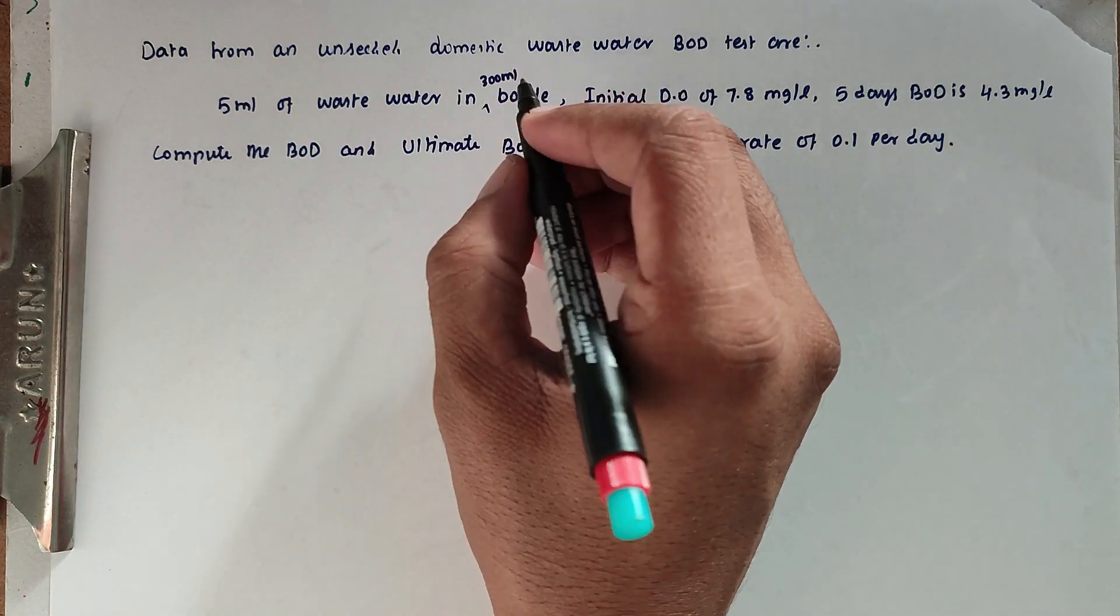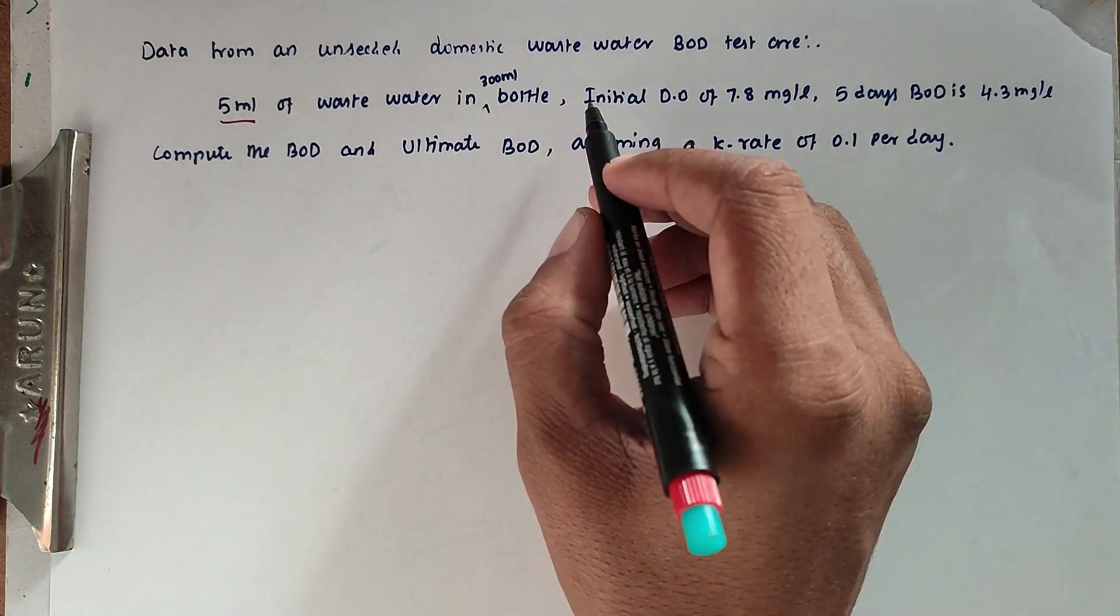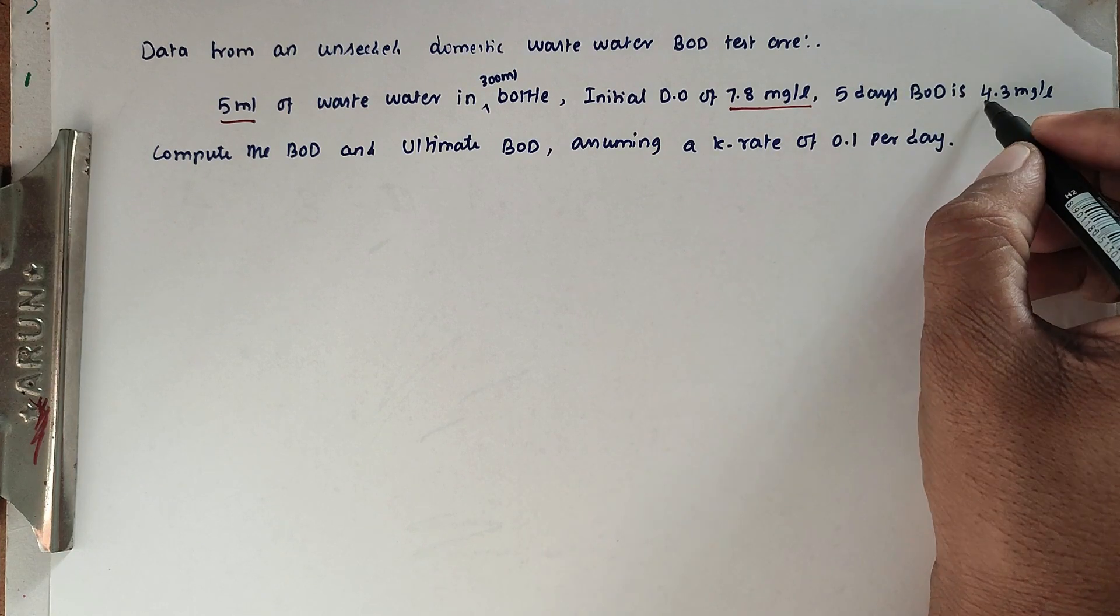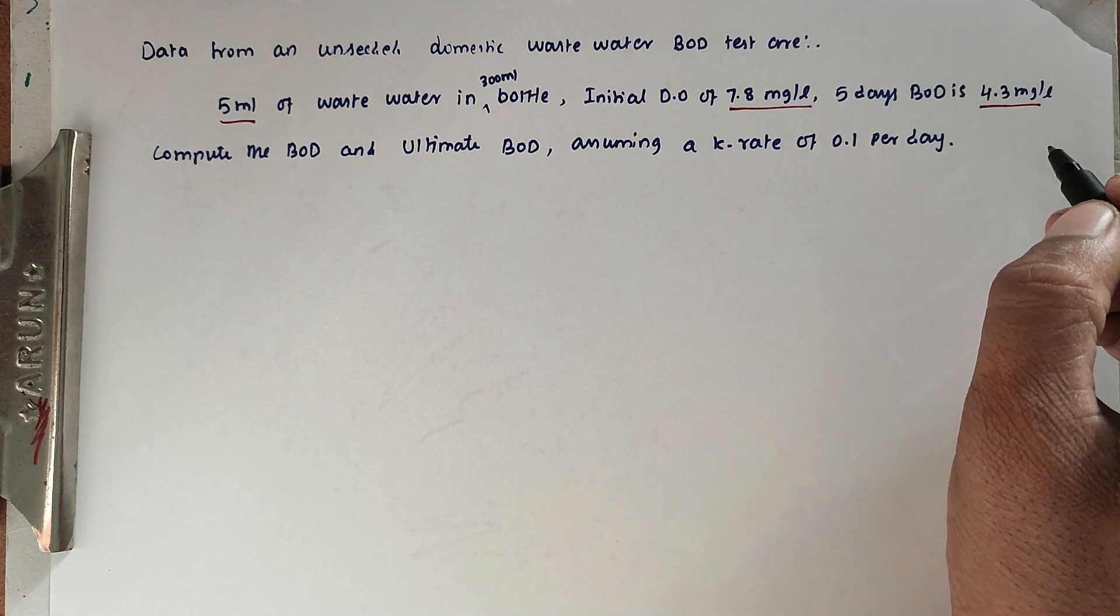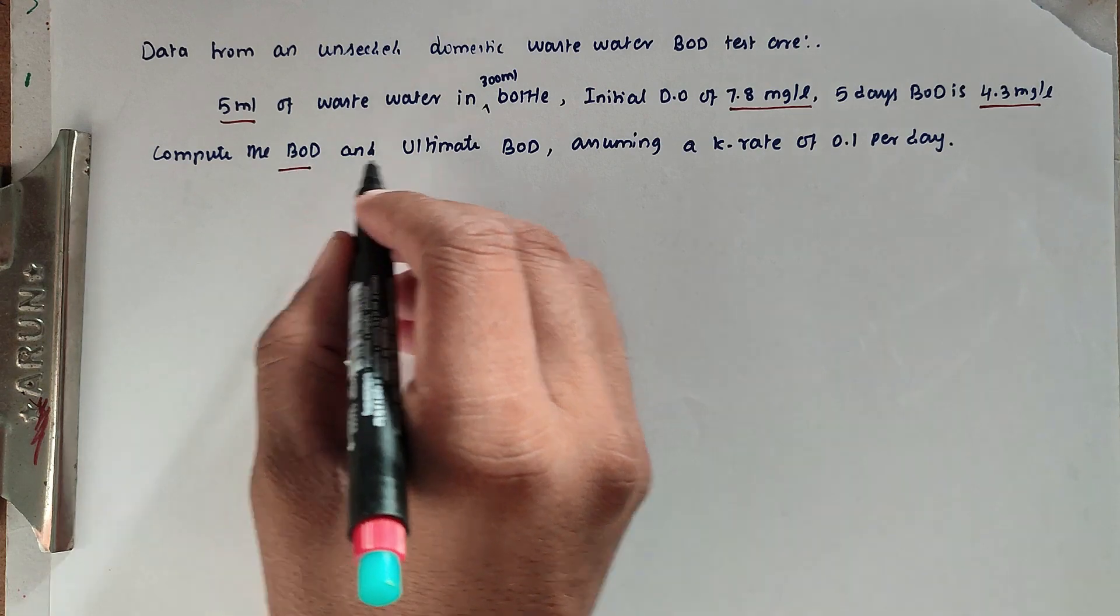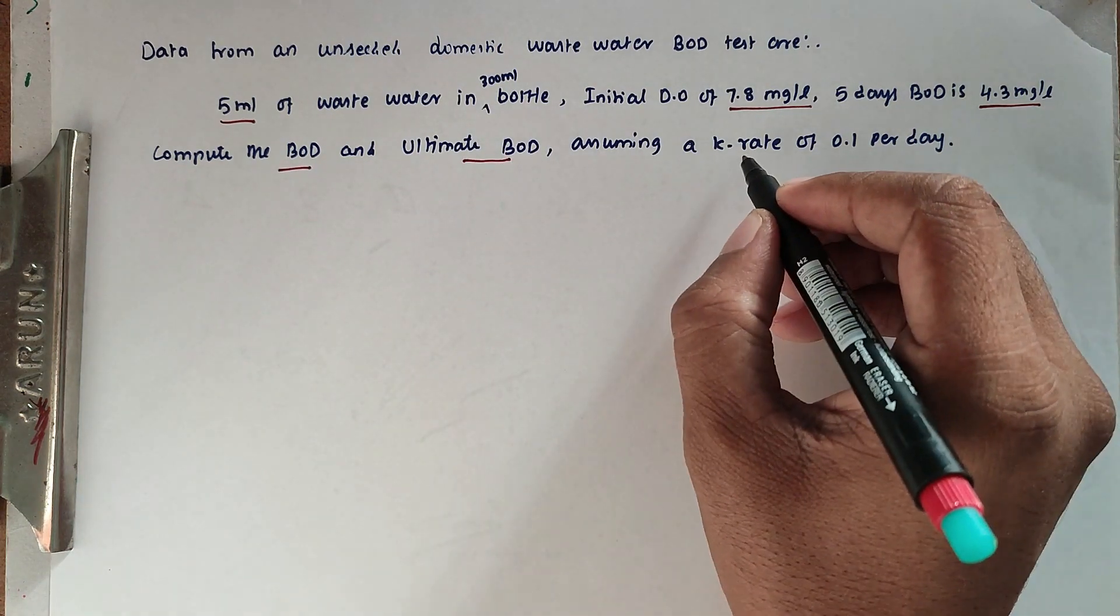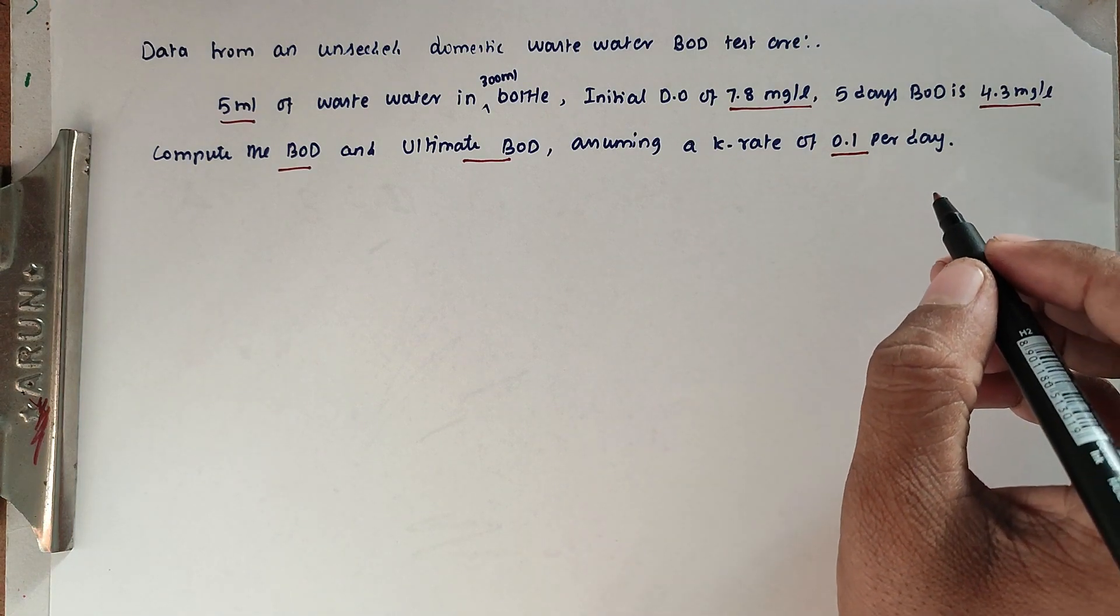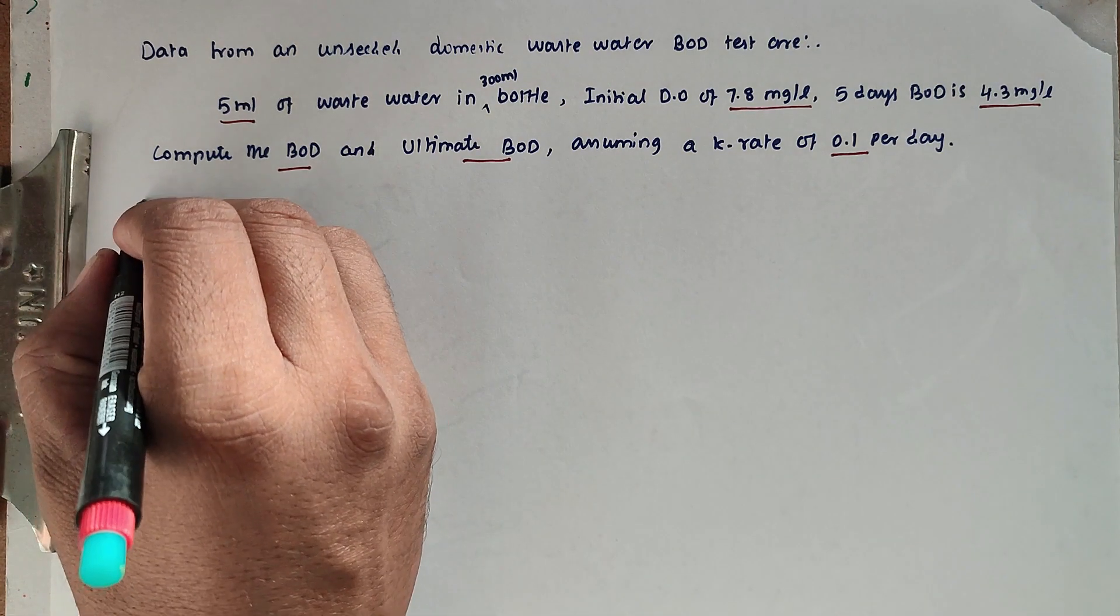in 300 ml BOD bottle, initial dissolved oxygen is 7.8 mg/L, and 5-day BOD is 4.3 mg/L. Compute the BOD and ultimate BOD, assuming a k-rate of 0.1 per day.